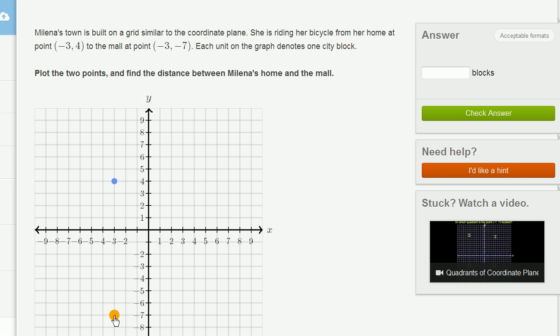Now we need to figure out the distance between her home and the mall. Now we could actually count it out, or we could just compute it. If we wanted to count it out, it's 1, 2, 3, 4, 5, 6, 7, 8, 9, 10, 11 blocks. So we could type that in.